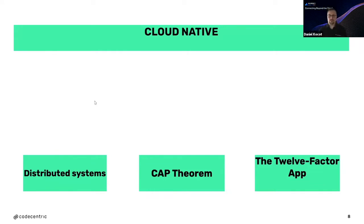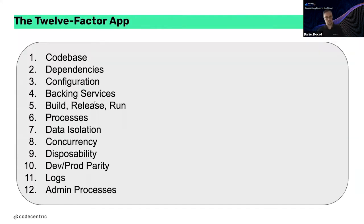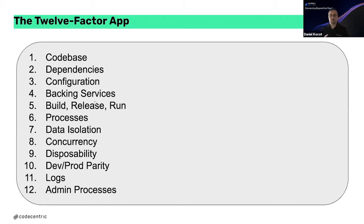When we think about cloud native, 12-factor apps are mentioned very often. A 12-factor app consists of 12 steps to develop an application: one code base, isolated and explicitly declared dependencies, configuration stored in the environment, and considerations around concurrency, logs, and admin processes.